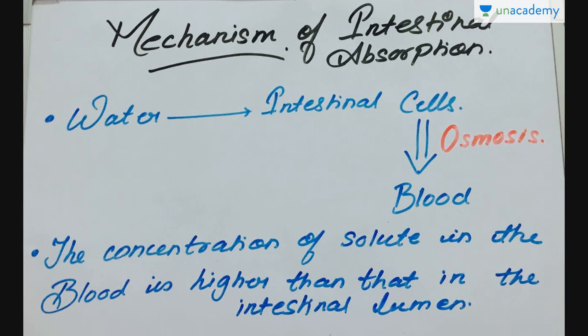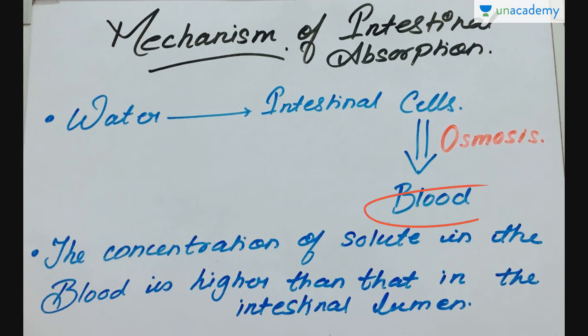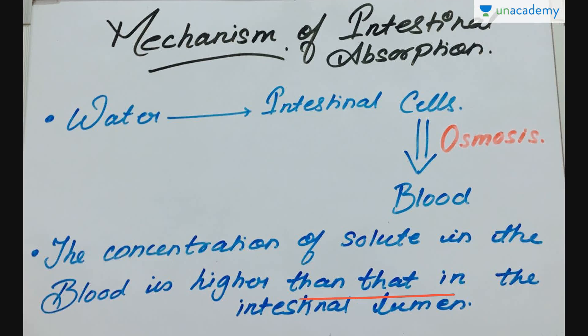Proceeding to the mechanism of intestinal absorption: generally, water is absorbed by the intestinal cells into the blood through the process of osmosis. The concentration of solute in the blood is higher than that in the intestinal lumen.